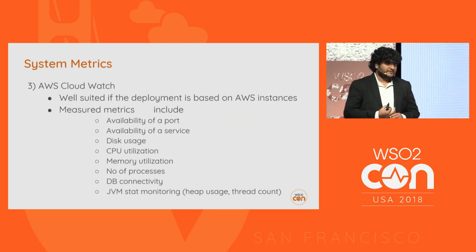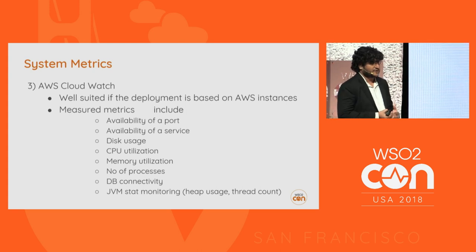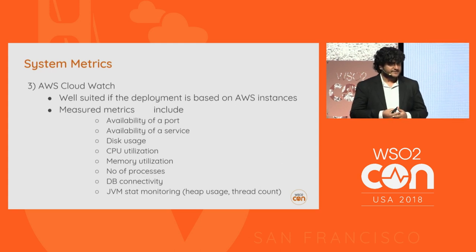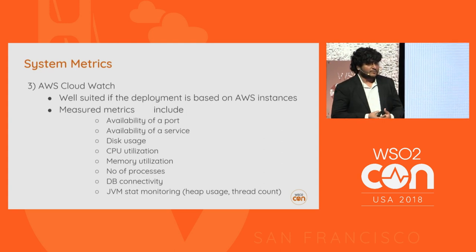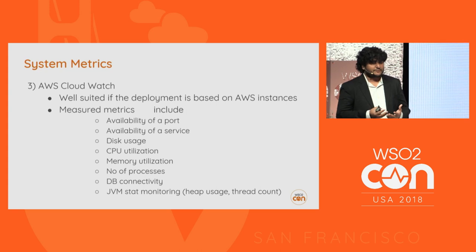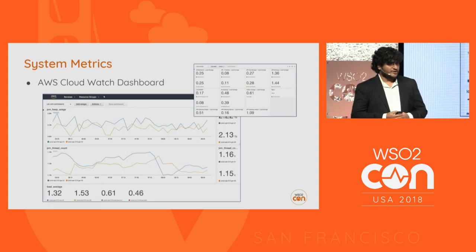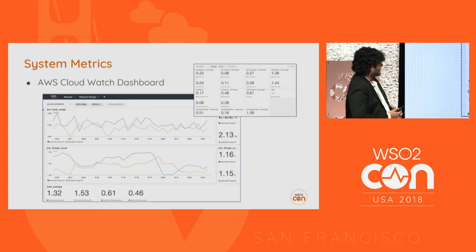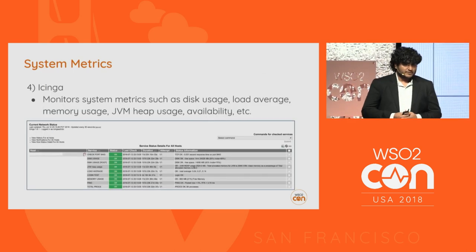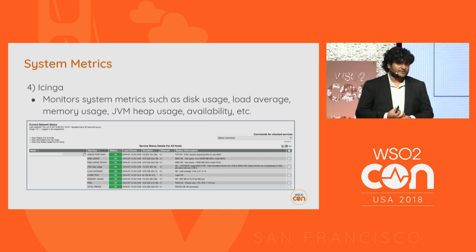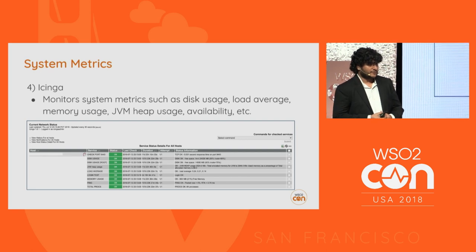For system metrics, we also use AWS CloudWatch, which is mainly useful if you're using a lot of AWS-based instances. It can check the availability of open server ports, services, CPU, and so on. Icinga is another option for system metrics that gives similar capabilities, and can be used for private deployments.